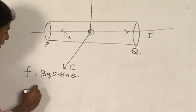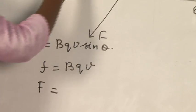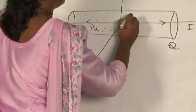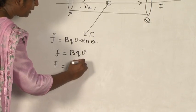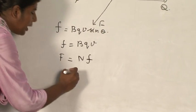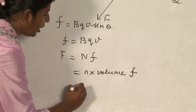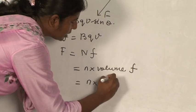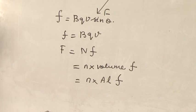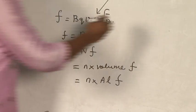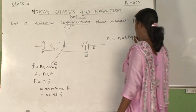Now θ is equal to 90 degrees, therefore F is equal to BQV. The total force for all the particles inside your current carrying conductor due to all the charges is F equal to N into f. This N is equal to N into volume into f, and volume is equal to area into length, so N into A into L. Volume is equal to area into distance into small f, and N is the number of electrons present in the current carrying conductor. So F is equal to N·A·L·BQV.